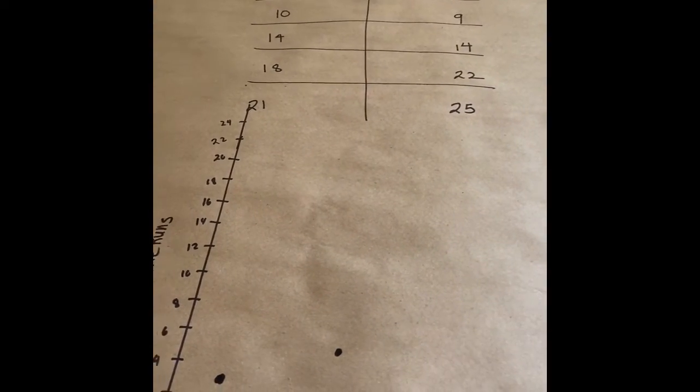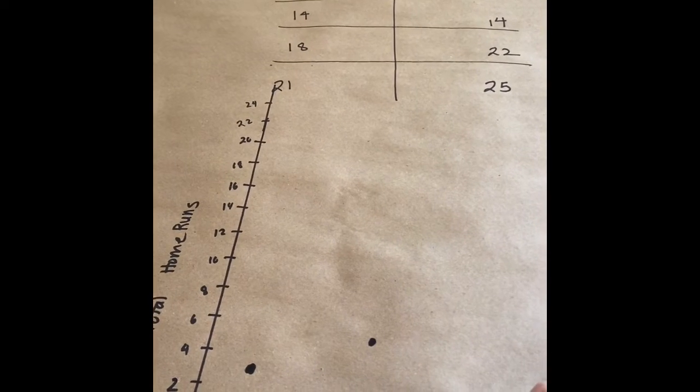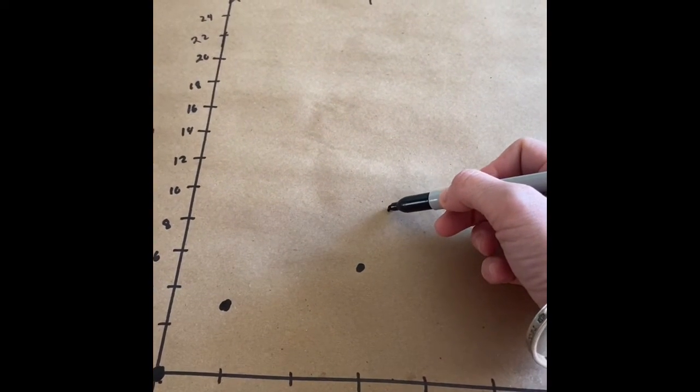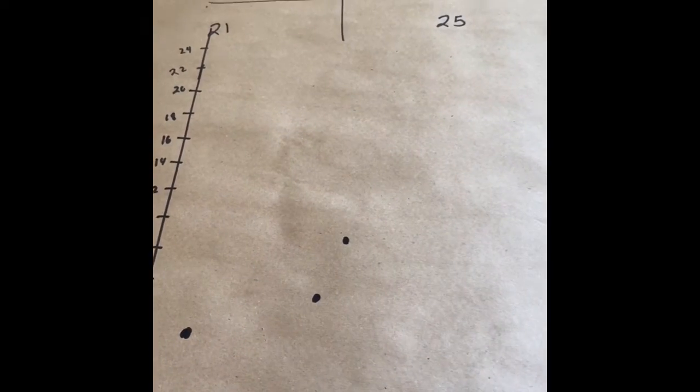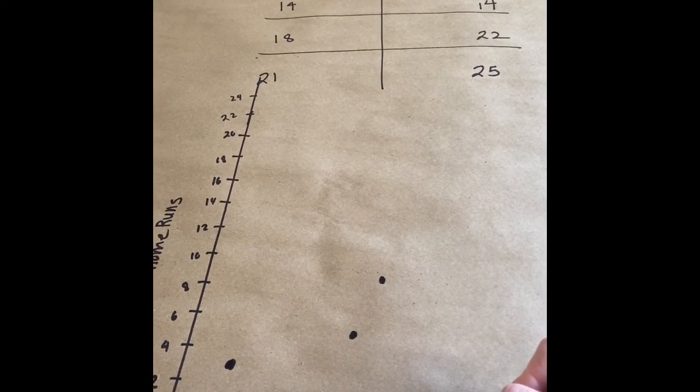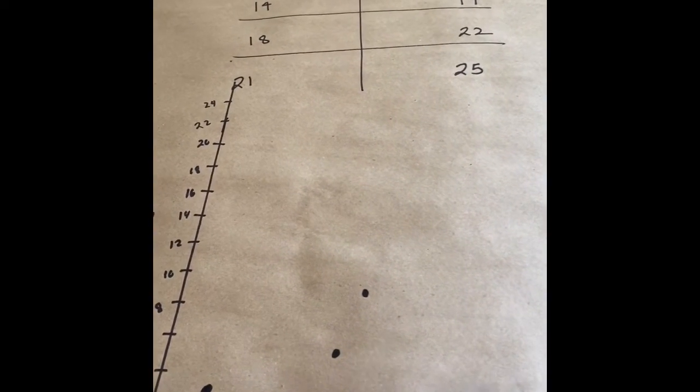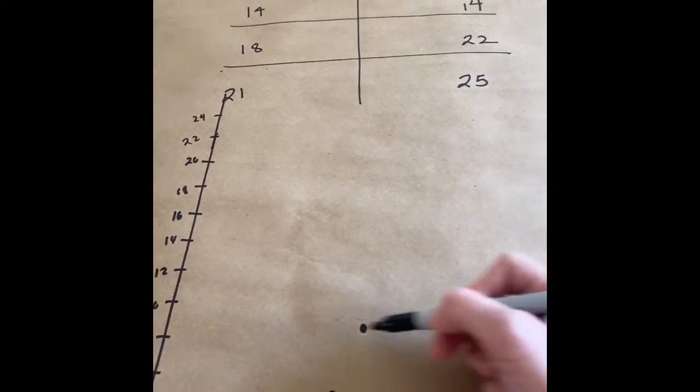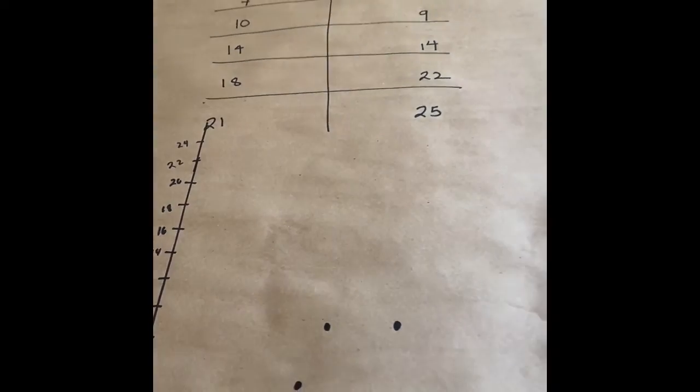If you play seven games, this baseball player hit nine home runs. This baseball player, even after 10 games had still only hit nine home runs. That's why these are along the same line.